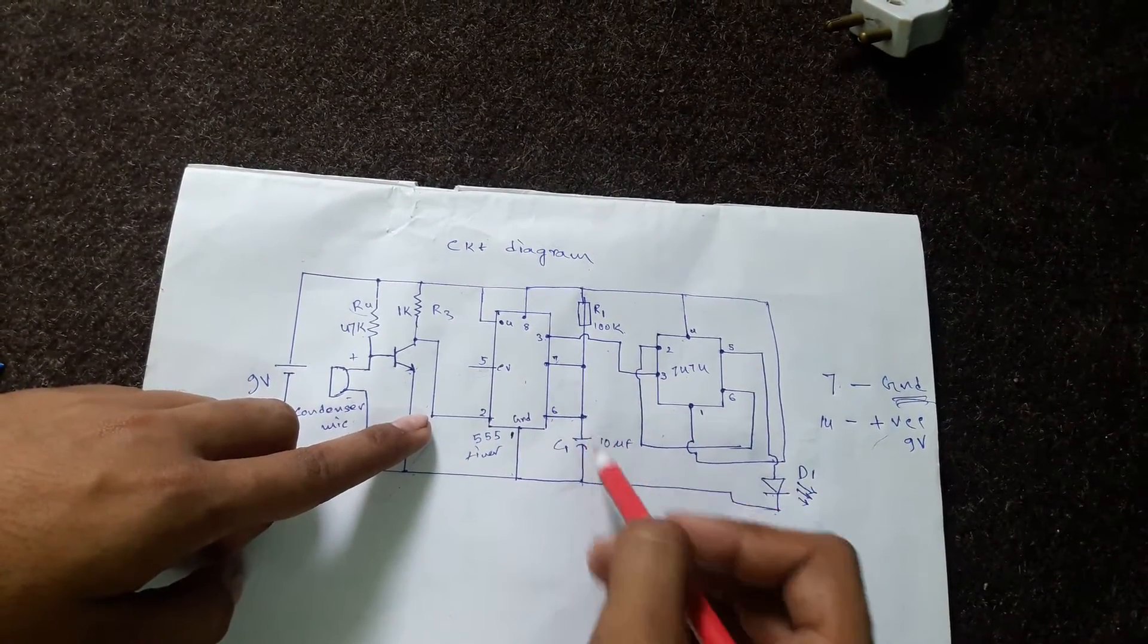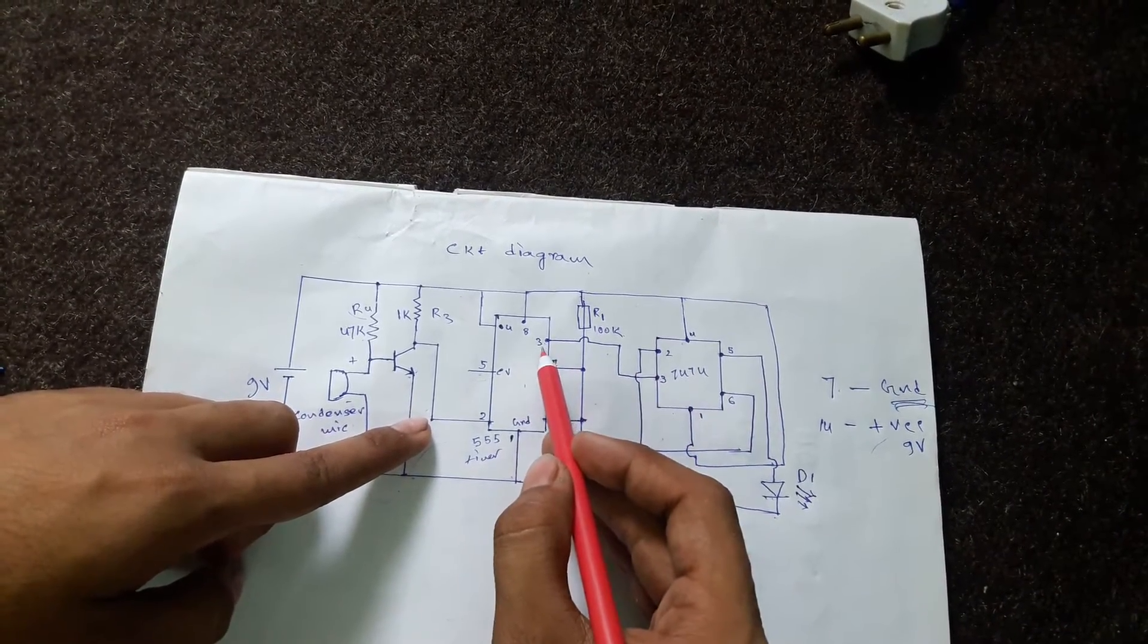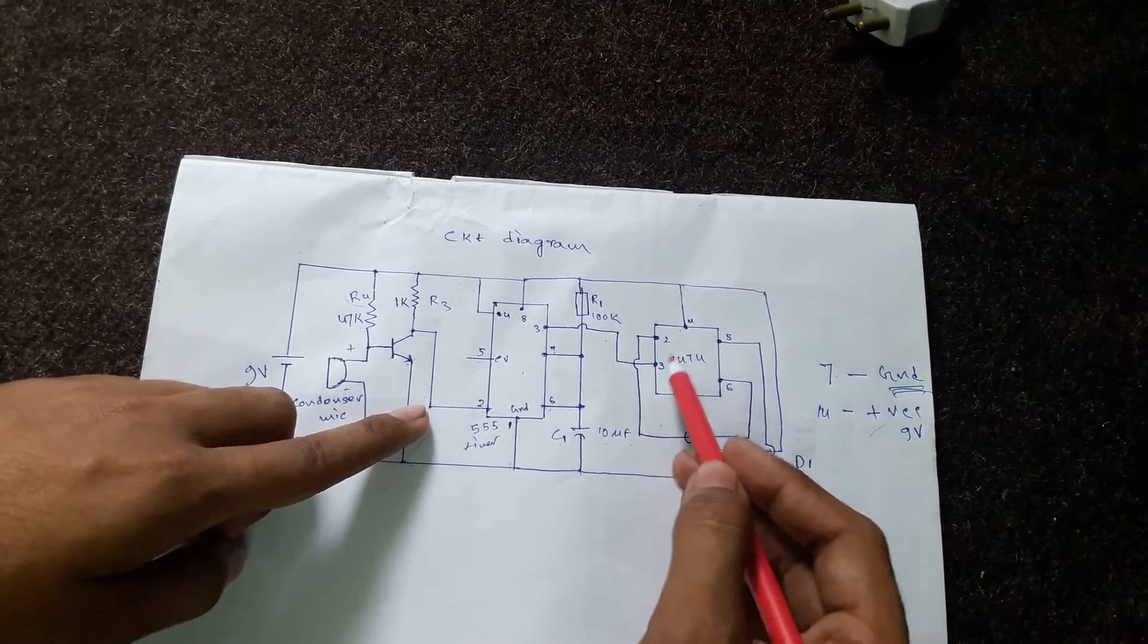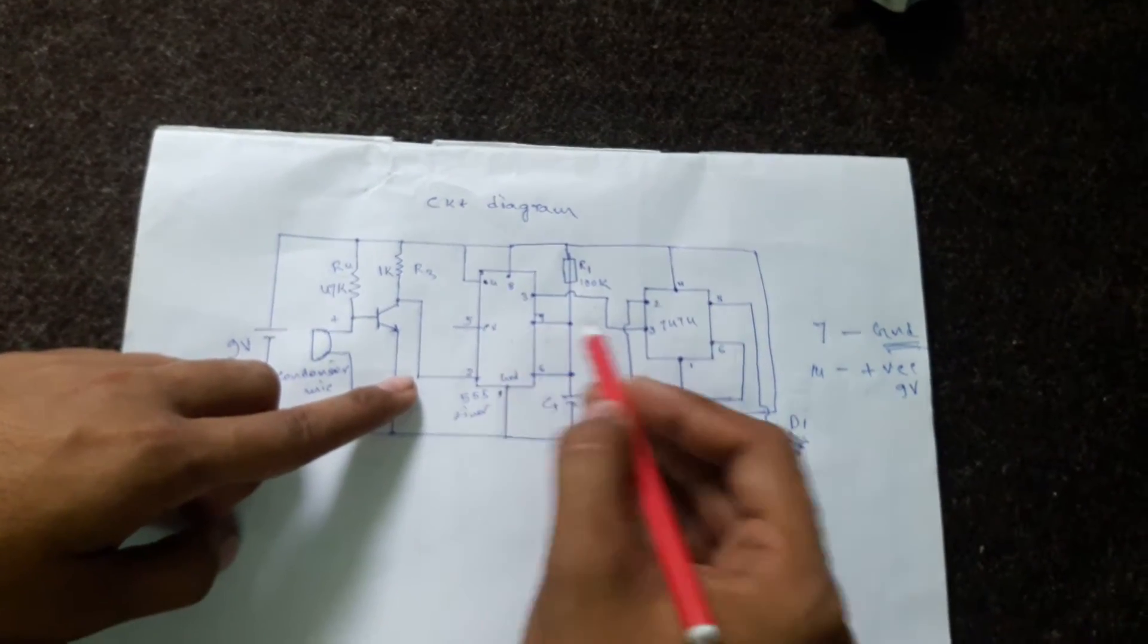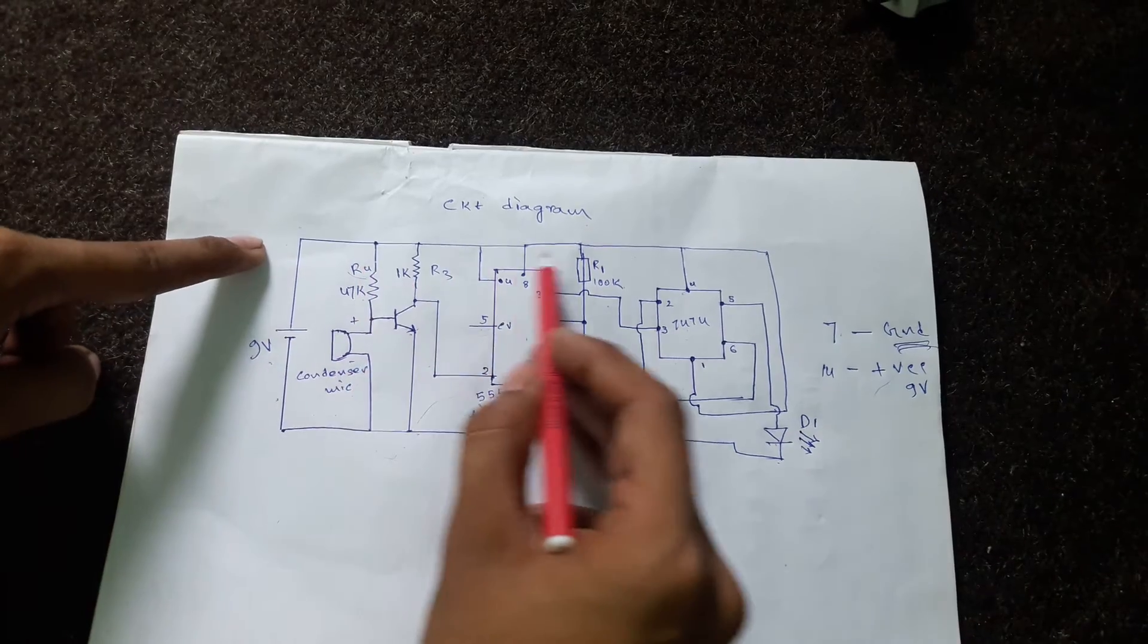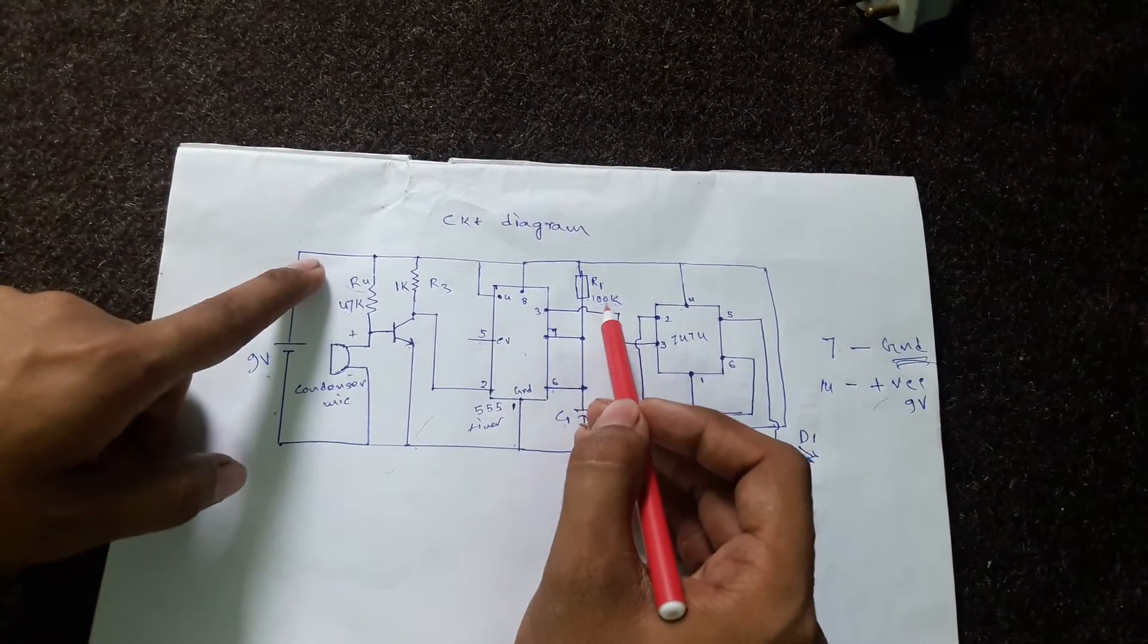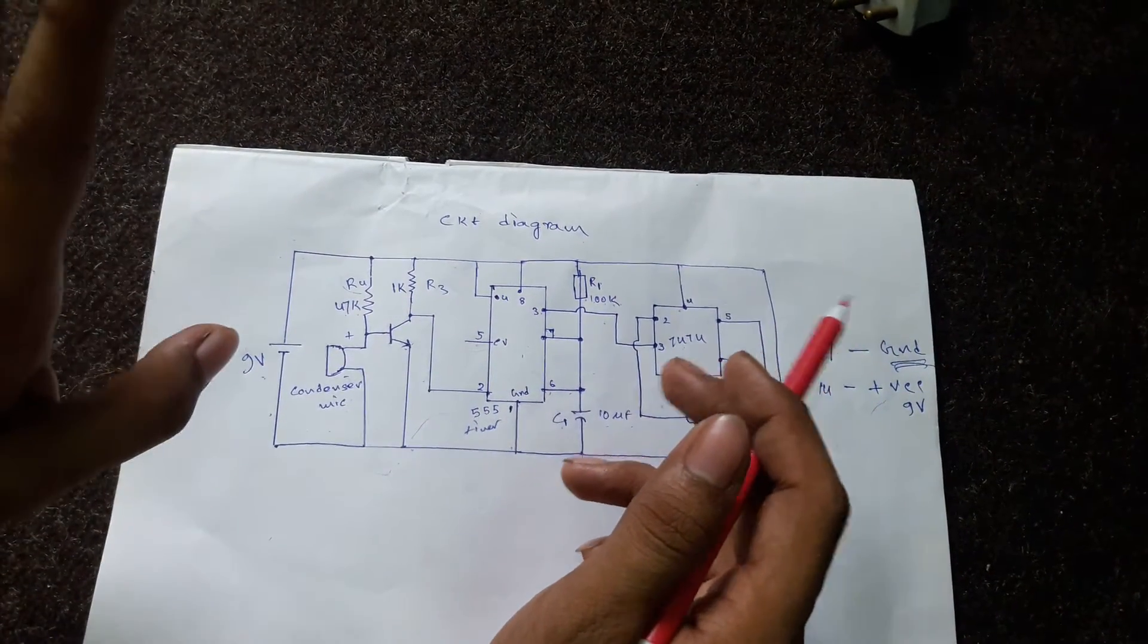Pins 6 and 7 will be shorted. From pin 6 there will be a bypass capacitor C1 of 10 microfarad which will be directly grounded. From pin 3 comes the output which acts as the clock pulse for the 7474. From pin 7 of the 555 timer, we connect to the 9-volt power supply through a 100K resistance. Be precise about the 47K, 1K, and 100K values because these create the proper clock pulse.